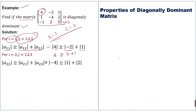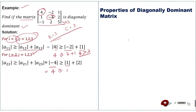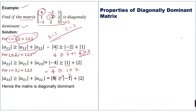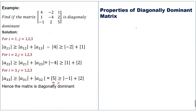For the second row, the diagonal entry is −4, so its magnitude is 4. The sum of the other entries is |1| + |2| = 3, and 4 > 3. For the third row (i = 3), the diagonal entry has magnitude 5, and the sum of the other entries is |−1| + |2| = 3, so 5 > 3.